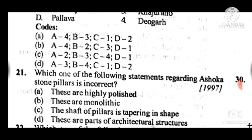Question 21: Which one of the following statements regarding Ashoka's stone pillars is incorrect? The answer is D — 'These are parts of ancient architectural structures.' This is the incorrect statement.